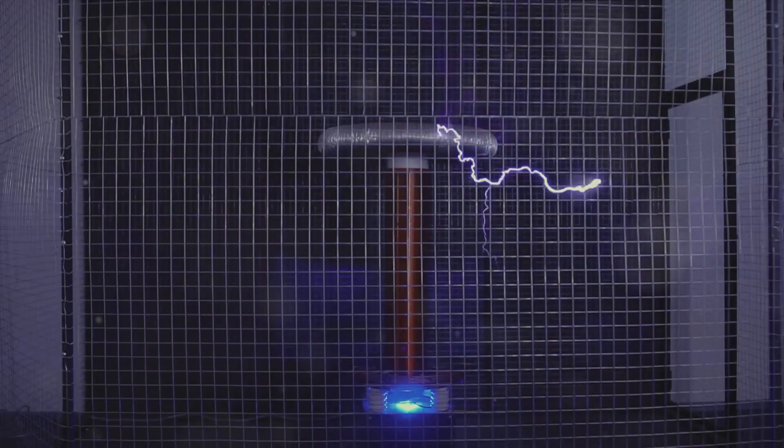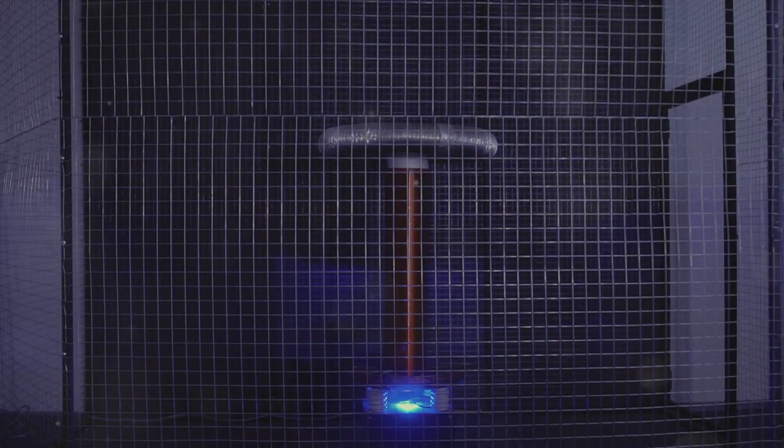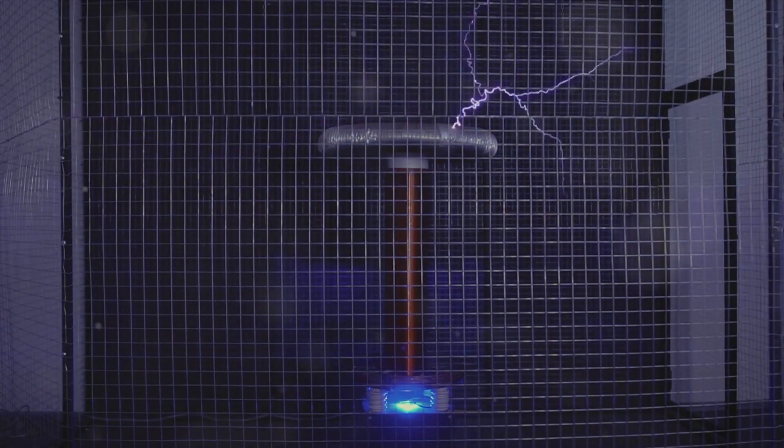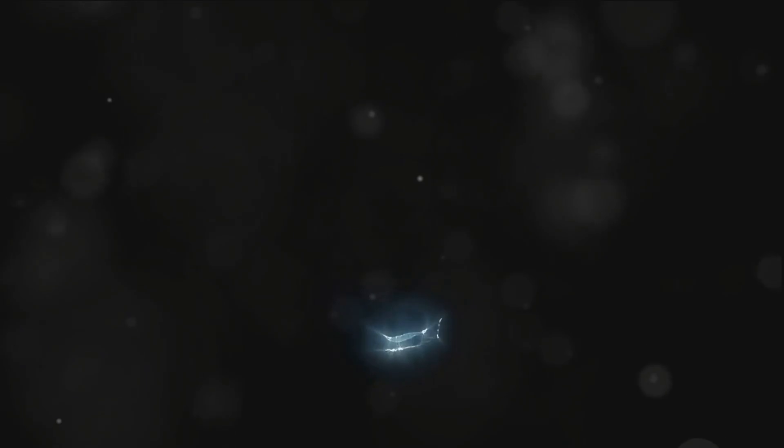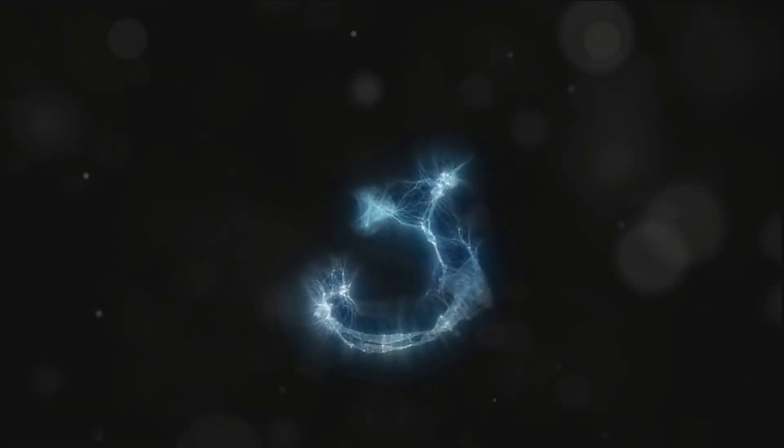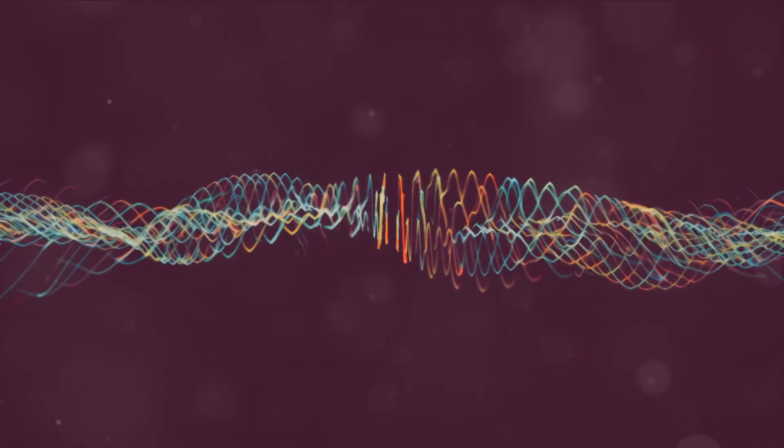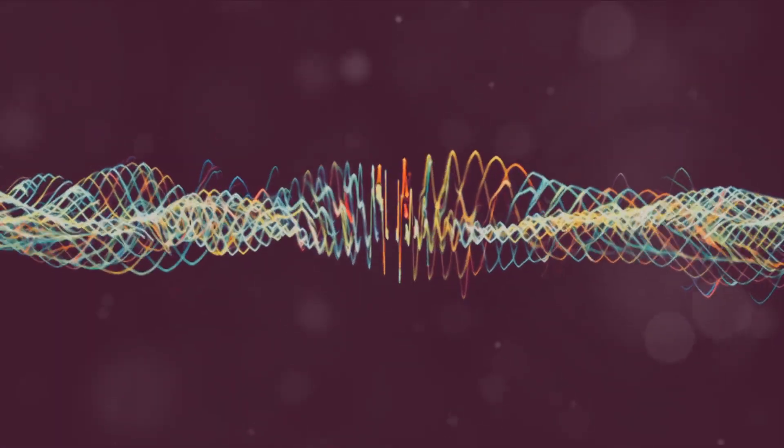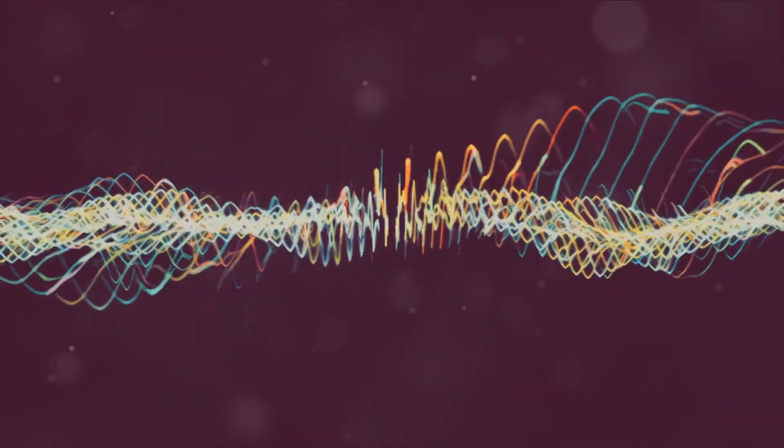The Tesla coil, a high-voltage, high-frequency power generator, exemplifies Tesla's ingenuity. But look closer, and you'll see the influence of 3, 6, and 9. The coil operates on the principle of resonance, a phenomenon that occurs at specific frequencies, which Tesla believed were intrinsically connected to these numbers.